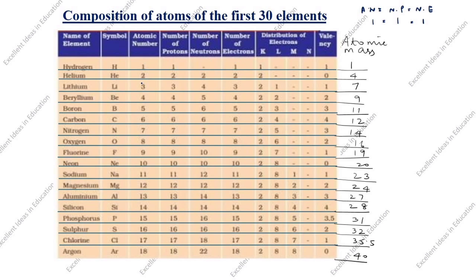For lithium, atomic number is 3, protons are 3, electrons are 3, but the neutron is given as 4. So how do we find this number of neutrons? Number of neutrons equals atomic mass minus atomic number.